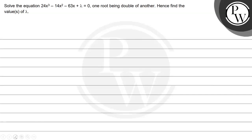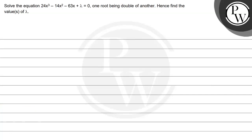Hello, let us read this question first. The question says: solve the equation 24x³ minus 14x² minus 63x plus λ equal to 0, one root being double of another. Hence find the values of λ. The key concept we are going to use here is: